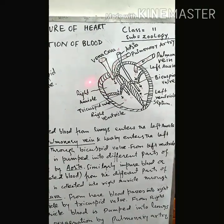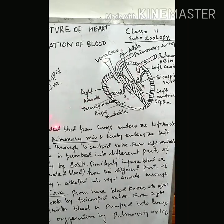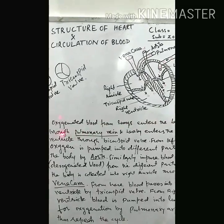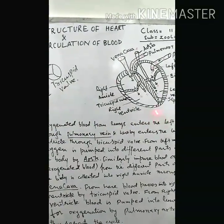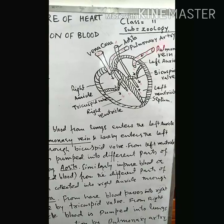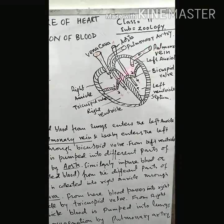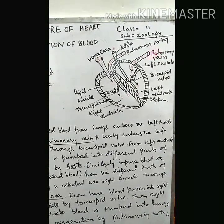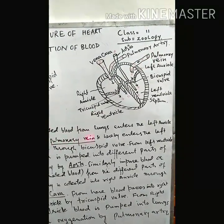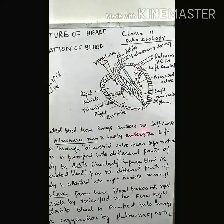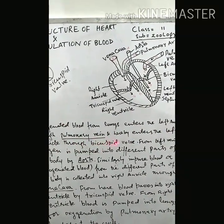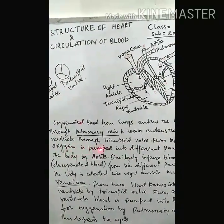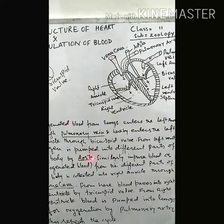So far as the circulation of blood in the heart is concerned: oxygenated blood — pure blood — from the lungs enters the left auricle. Oxygenated blood from the lungs comes through the pulmonary vein and enters the left ventricle through the bicuspid valve. From the left ventricle, oxygen-rich blood is pumped into different parts of the body by the aorta.